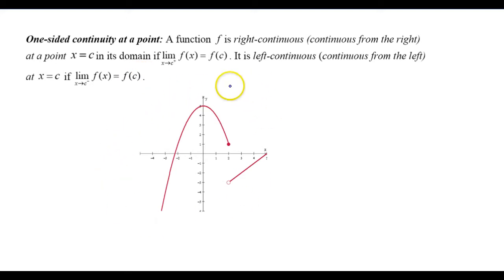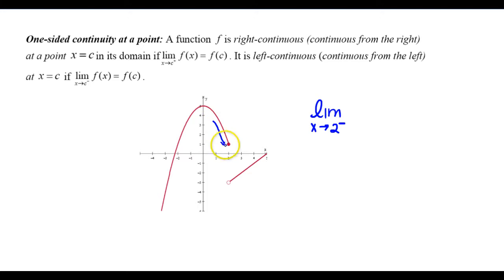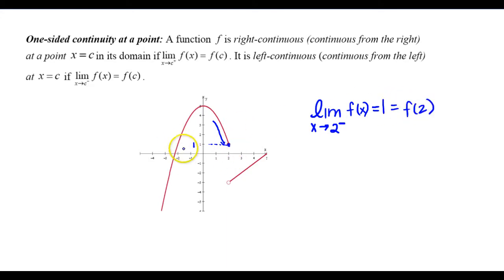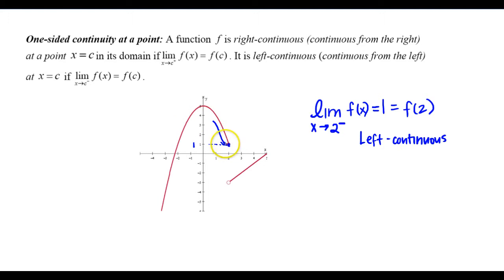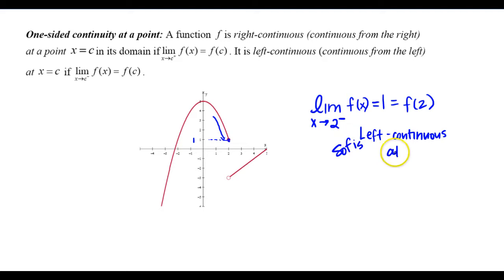Looking at this graph, let's consider the limit from the left side of 2. As I approach 2 from the left, I'm getting closer and closer to 1, and I happen to equal the function value at 2 — that's where the filled-in circle is. So the limit as x approaches 2 from the left equals 1, which also equals f of 2. Since I approached from the left and got closer to the function value, this is considered to be left continuous.